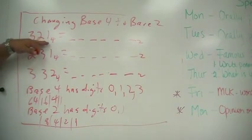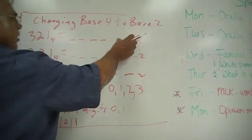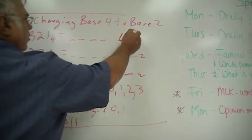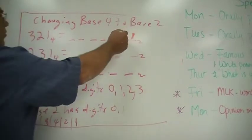So change this to base 2 as a simple procedure, you just need two places for each digit. So 1 in base 2 would just be 0, 1, but you have to have this 0 place here.